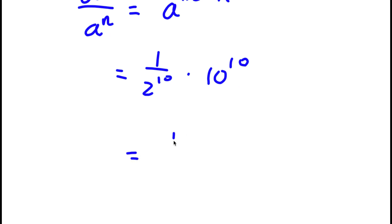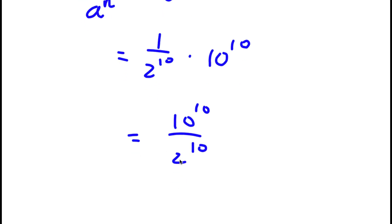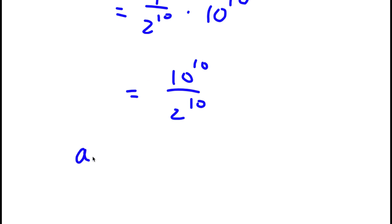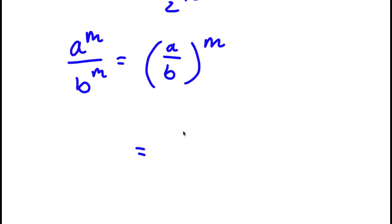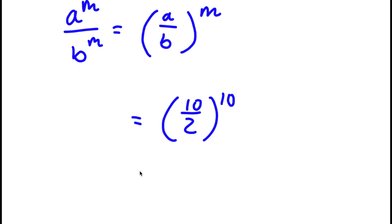So now if I multiply these again I have 10 to the power of 10 over 2 to the power of 10. And if I have something in the form a to the power of m over b to the power of m, this is simply equal to a over b to the power of m. So 10 to the power of 10 over 2 to the power of 10 equals 10 over 2 to the power of 10. 10 over 2 is 5, so 5 to the power of 10 is my answer.